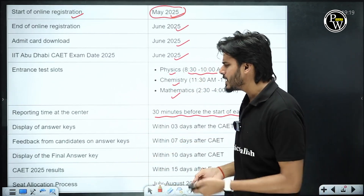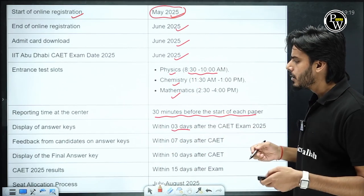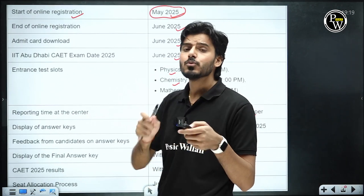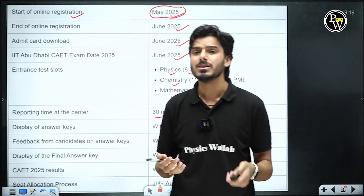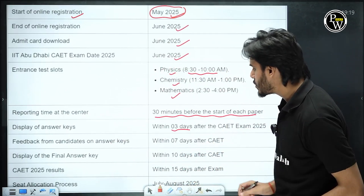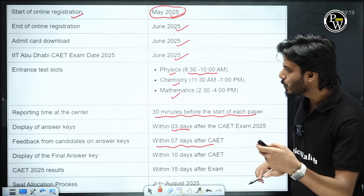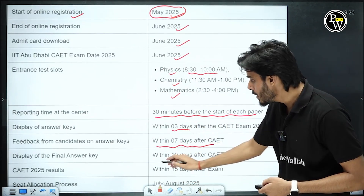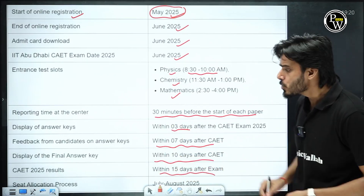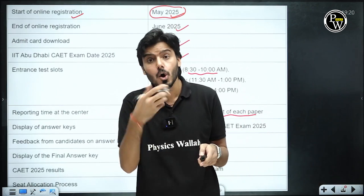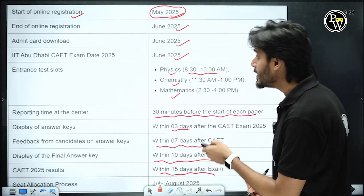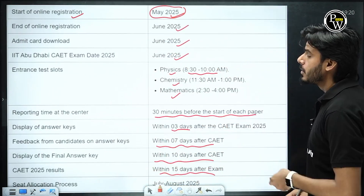Display of answer keys can be expected within three days, according to information from the website. Feedback from candidates can be submitted — just like with JEE, if you have a problem with the answer key, OMR sheet, or answers. This feedback window is within seven days after CAET. The final answer key will be released within 10 days after CAET, and the final results will be within 15 days of the exam. You can expect the final seat selection up to August.